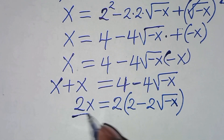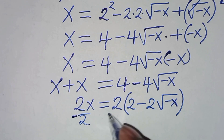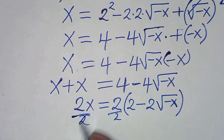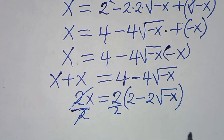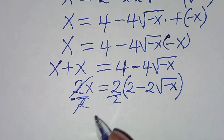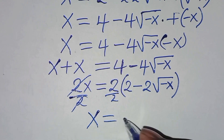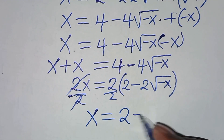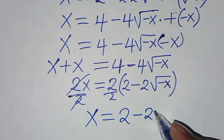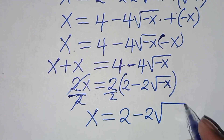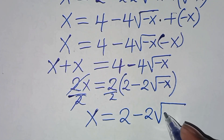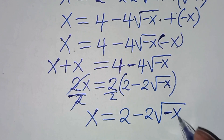So we divide both sides by 2, so that the value of x equals 2 minus 2 square root of minus x.